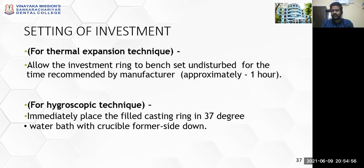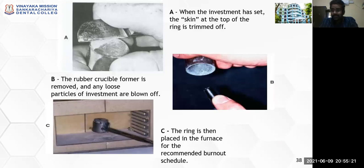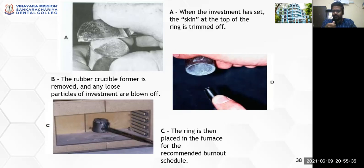When planning to incorporate hygroscopic expansion, immediately place the full casting ring at 37 degrees Celsius in a water bath with the crucible former as the base, for a stipulated time to achieve hygroscopic expansion. Once the investment material has set completely, the skin at the top of the ring is trimmed and removed, and blown clean. When using a rubber or silicone crucible former, the crucible former is removed and any loose particles within the investment are blown off with air. The ring is then placed into a furnace for the burnout procedure.